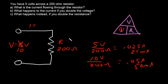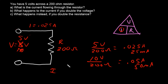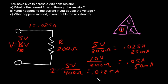What would happen if instead you doubled the resistance? Going back to the original 5 volts across the 200-ohm resistor — originally you had 0.025 amps — if you double the resistance to 400 ohms, then I equals V over R: 5 volts divided by 400 ohms is 0.0125 amps or 12.5 milliamps. Since resistance is in the denominator, increasing it reduces the current.